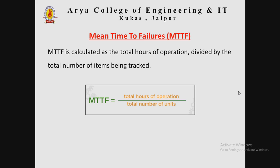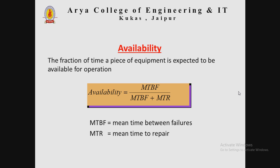Mathematically, MTBF is equal to total operation time divided by the total number of failures. The third metric is Mean Time to Failures (MTTF), calculated as the total hours of operation divided by the total number of items being tracked.